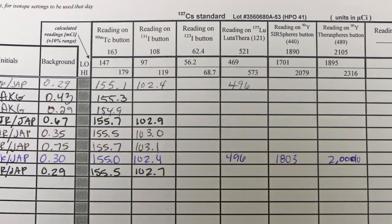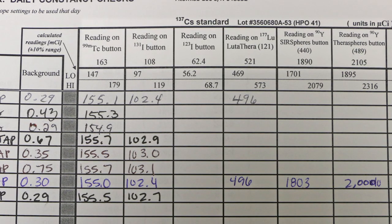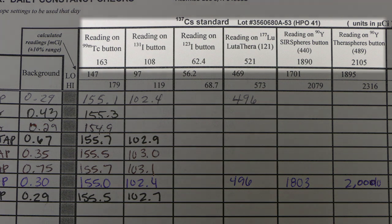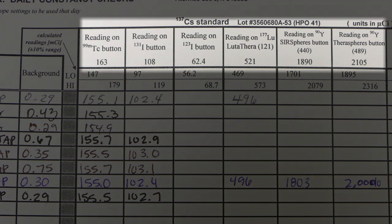Cesium-137 can be used to test other radionuclides, as there are correction factors built into the dose calibrator to account for the energies and photon fluxes of the radionuclides tested in the dose calibrator.